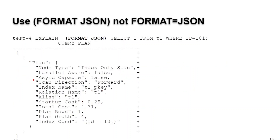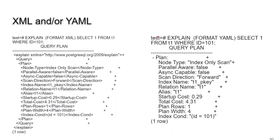If you want FORMAT JSON, which gives a little more information — such as whether the query is parallel-aware or async capable — you put in parentheses FORMAT JSON, not FORMAT EQUALS JSON. And if you want XML or YAML, just change the format condition accordingly.